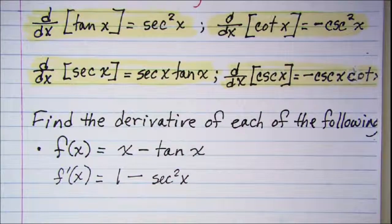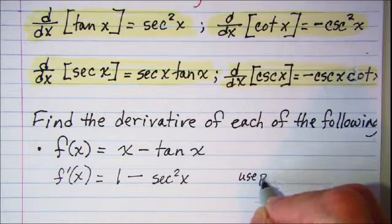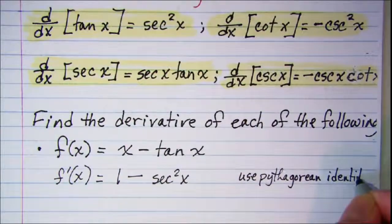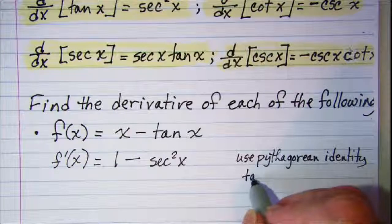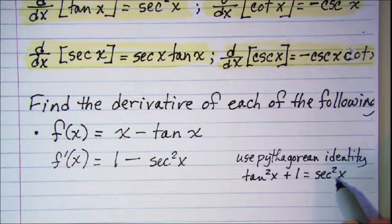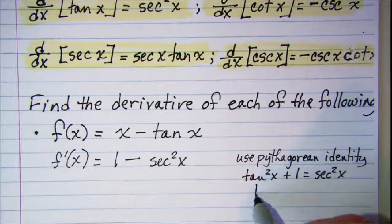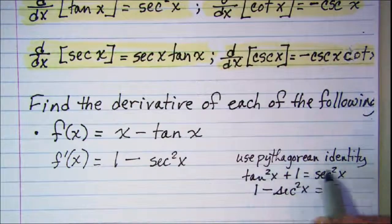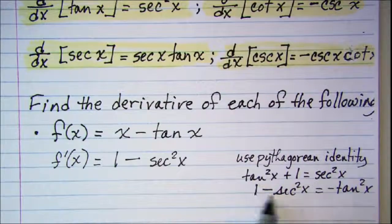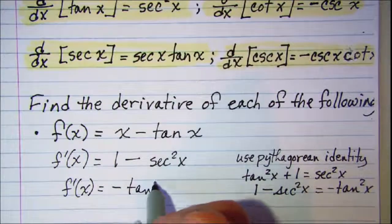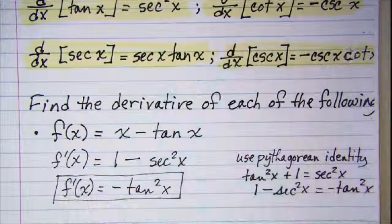We know the Pythagorean identity: tangent squared plus one equals secant squared. Manipulating this — keeping one on the left and subtracting secant squared from both sides, then moving tangent squared — we can see that one minus secant squared is the same as negative tangent squared. So the derivative simplifies to negative tangent squared x.